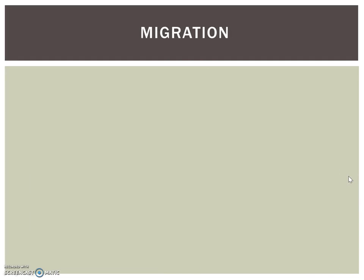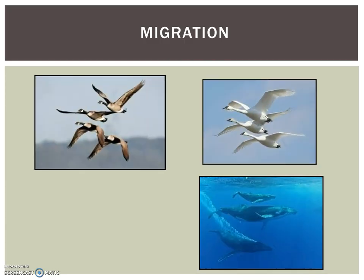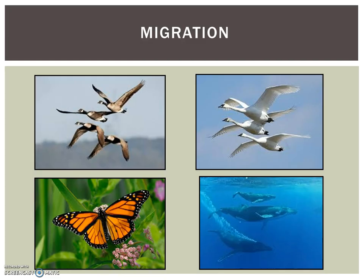Migration is another type of behavioral adaptation. Migration is the movement of animals from one region to another in response to a change in seasons. Many animals, including many mammals, birds, and insects, often migrate when there are changes in temperature or the number of hours of daylight, which means that less food will be available. In North America, about two-thirds of bird species fly south in the fall to areas where food will be available during winter, then fly north in the spring to areas where they breed. Monarch butterflies fly south in winter to the mountains of Mexico. Many species of whales also migrate.